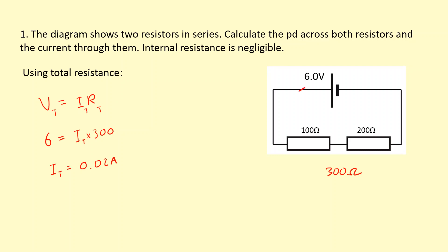Because this is a series circuit, that 0.02 amps is going to flow through both resistors — 0.02 amps through this one and 0.02 amps through that one. Now I know the current through both and also the resistance, so I can apply Ohm's law to the individual components. V equals IR for this one: V equals 0.02 times 100, which gives me 2 volts.